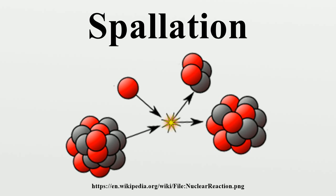Experiments have been done with depleted uranium targets, but although these produce the most intense neutron beams, they also have the shortest lives. Generally, therefore, tantalum targets have been used. Spallation processes in the target produce neutrons initially at very high energies — a good fraction of the proton energy. These neutrons are then slowed in moderators filled with liquid hydrogen or liquid methane to the energies needed for the scattering instruments.